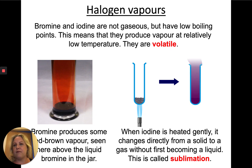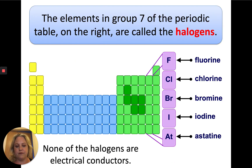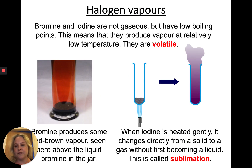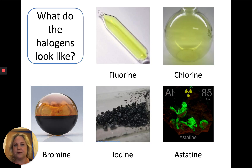Bromine and iodine are liquids and solids respectively at room temperature, while fluorine and chlorine are gases. They have low boiling points, which means they're very volatile. Here's a little picture of some of the halogens showing what they look like.